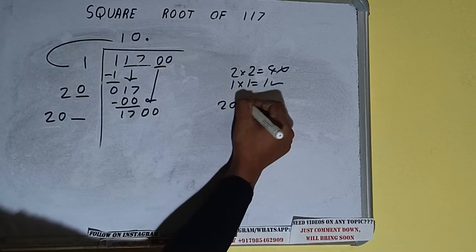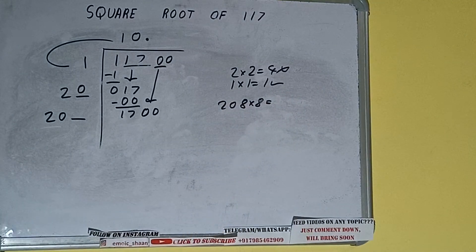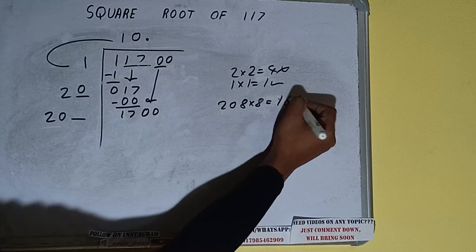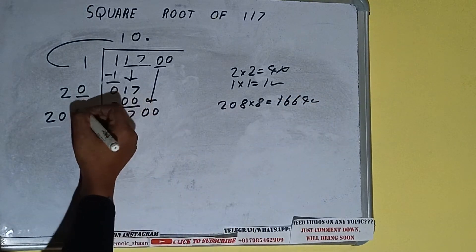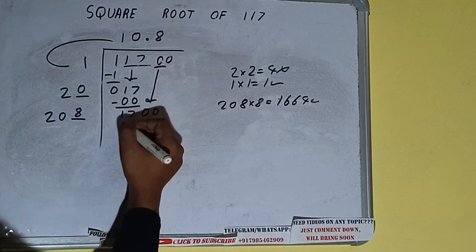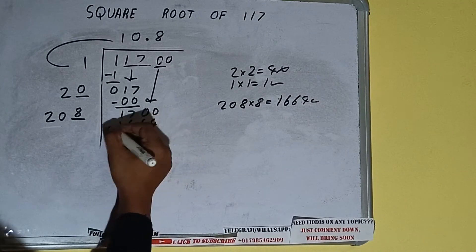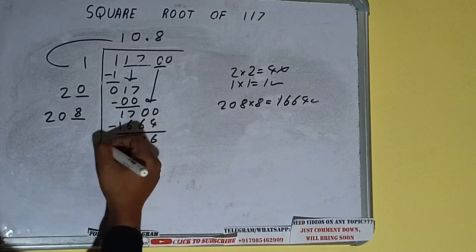208 into 8 we can try and we'll be getting 1664 which is good to take. So 8 here and 8 here, 1664 subtract 36 will be left.